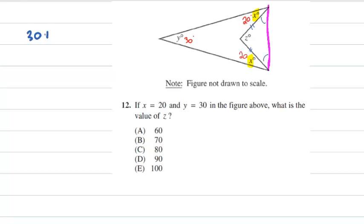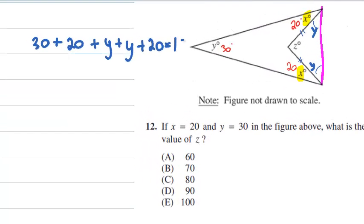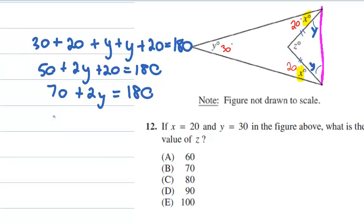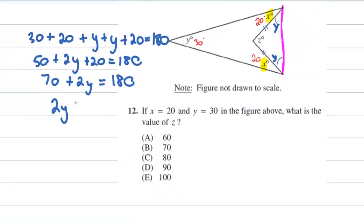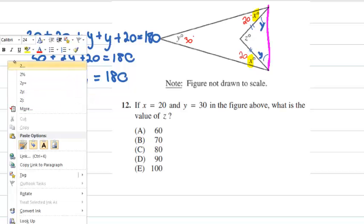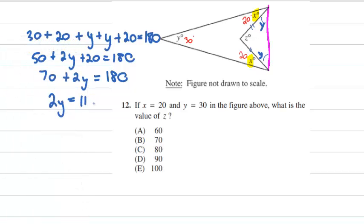30 plus 20 plus, I'll call this Y right now, plus Y plus the other Y plus 20 all has to equal 180. Simplify that a little. 50 plus 2Y plus 20 equals 180. Combine more like terms. 70 plus 2Y equals 180. Take away 70 from both sides. 2Y equals 110. Divide by 2 on both sides, and Y equals 55.